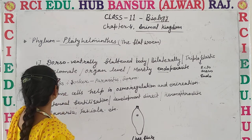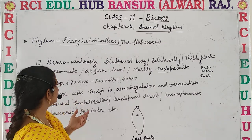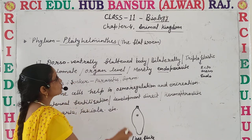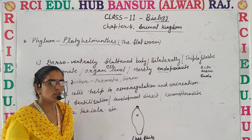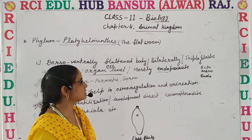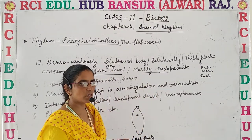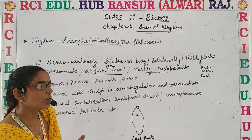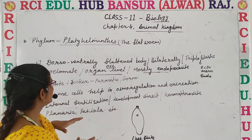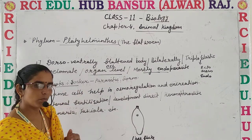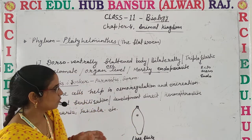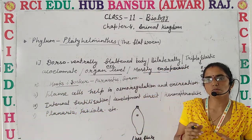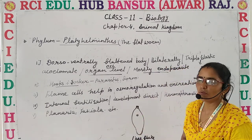They are acoelomate, meaning there is no body cavity present. They show organ level of organization — this is the last phylum having organ level of organization. They are mostly endoparasitic and absorb nutrition from the body of the host. They possess hooks and sucker-like structures to absorb nutrition from another living organism.